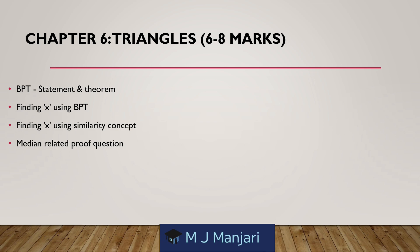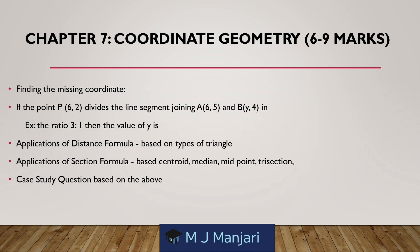Chapter 6: Triangles — weightage 6 to 8 marks. Topics: BPT statement and theorem; finding x using BPT or Thales theorem; finding x using similarity concept; and median-related proof questions. Chapter 7: Coordinate Geometry — weightage 6 to 9 marks. Topics: finding the missing coordinate; if the point P divides the line segment joining A and B in a ratio, for example 3 is to 1, find the value of y; application of distance formula based on type of triangle; application of section formula based on centroid, median, midpoint, trisection; and case study questions based on these topics.